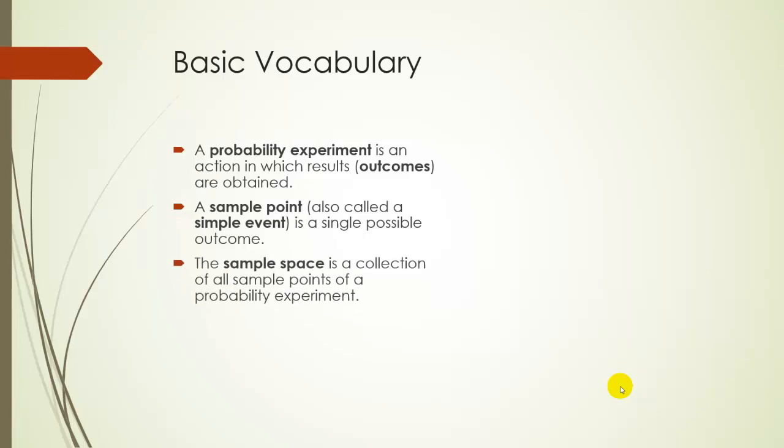A sample space is a collection of all sample points of a probability experiment, and an event is a subset of the sample space or just a group of sample points.